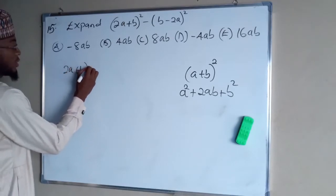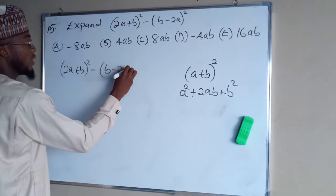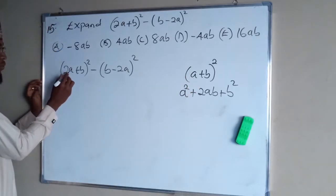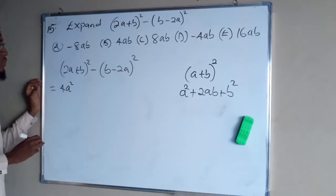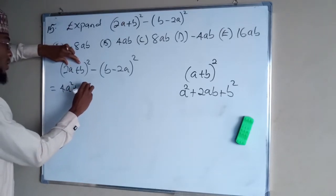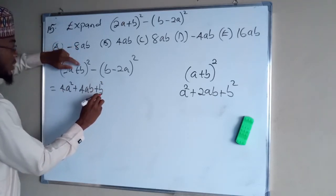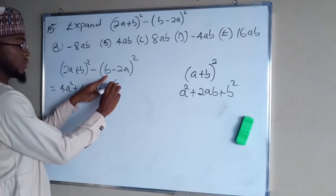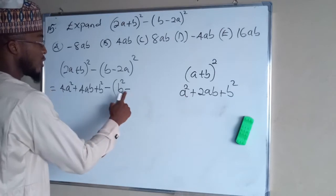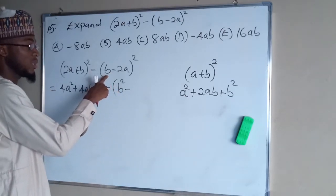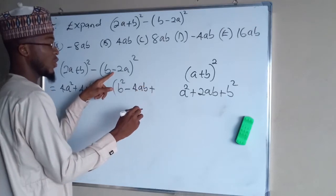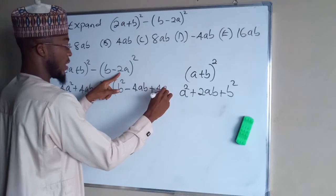We have (2a + b)² minus (b - 2a)². For the first bracket, treating 2a as 'a', squaring it gives 4a squared. Then 2 times 2a times b gives 4ab, and the last term squared gives b squared. For the second bracket, we square it: b squared, then 2 times b times 2a gives 4ab, and (2a)² gives 4a squared. But because of the negative sign, the plus becomes minus.